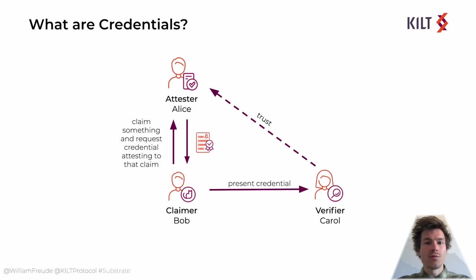Let us start with a quick look at our basic credential model consisting of three actors: a claimer Bob, an attestor Alice, and a verifier Carol. Bob wants to prove his possession of a specific cat to a verifier Carol, but she cannot check this directly and does not trust Bob without the approval of a third party that she trusts. Therefore, Bob shows his credential to Alice, and if everything checks out, she signs it and sends back the attestation to Bob, which he can present to Carol.